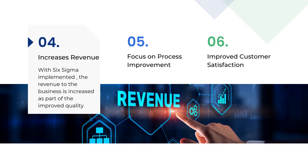The fourth advantage is increased revenue. With Six Sigma implemented in manufacturing, the revenue to the business is increased as part of the improved quality. The profits to the business are improved with Six Sigma implementation. High-standard products have a good market, hence improving the business's revenue generation. Since wastes are reduced significantly, they are converted into sales which increases the business's revenue.